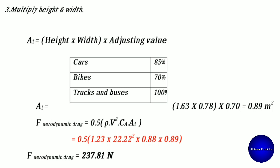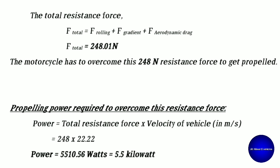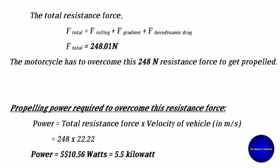Substituting into the aerodynamic drag formula: 0.5 × 1.23 × 22.22² × 0.88 × 0.89 = 237.81 Newton. The total resistance force is F_rolling + F_gradient + F_aerodynamic = 10.20 + 0 + 237.81 = 248.81 Newton. The motorcycle must overcome this 248.81 Newton resistance force to be propelled.